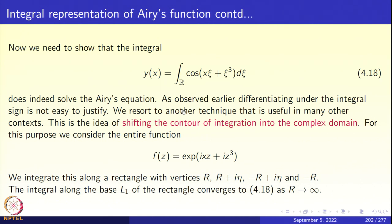Let us start with the entire function f(z) = exp(i·x·z + i·z³), where χ has been replaced by complex z. This is an entire function. By Cauchy's theorem, the integral of an entire function over a rectangle is 0. Choose the rectangle with vertices -R, R, R + iη, -R + iη. The base of the rectangle is the interval [-R, R], so along the base, the integral of f(z) dz as R → ∞ gives the integral we want.